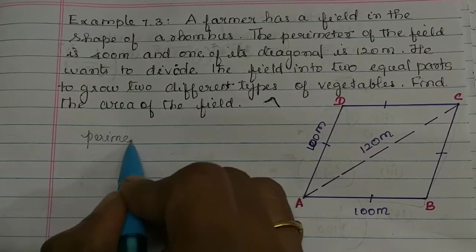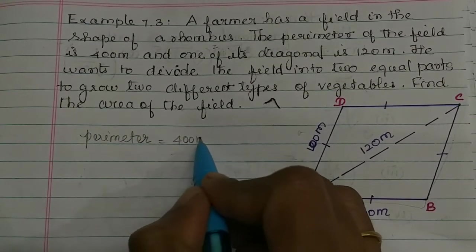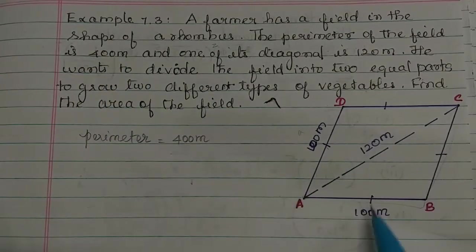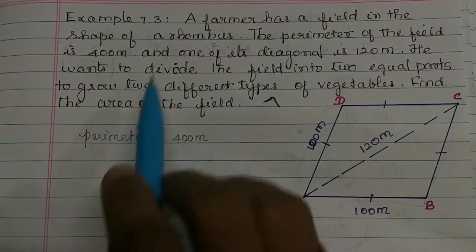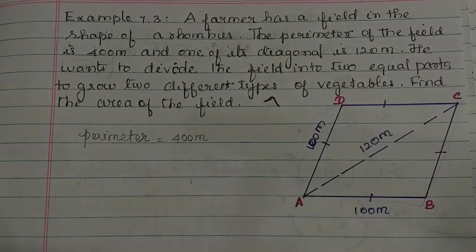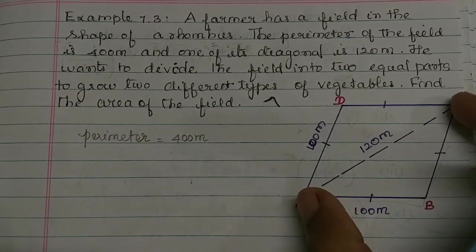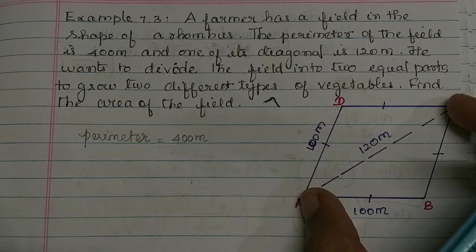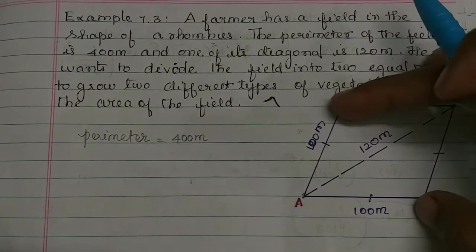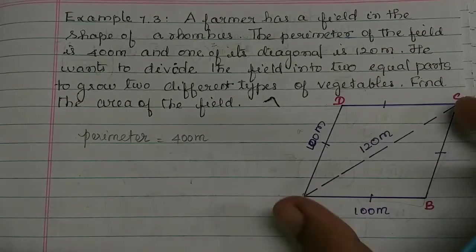The perimeter of the rhombus is equal to 400m. In a rhombus, all 4 sides are equal. One of its diagonals is 120m. The corners of opposite vertices form the diagonal. If you look at the rhombus, there are 2 diagonals, and one of the diagonals is 120m.